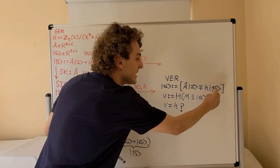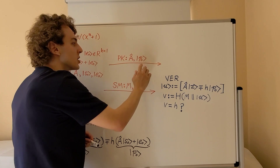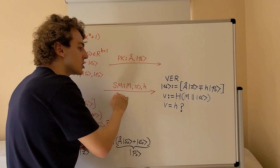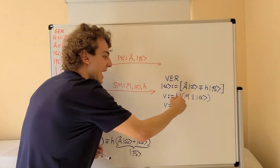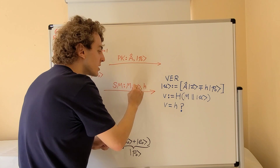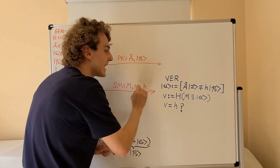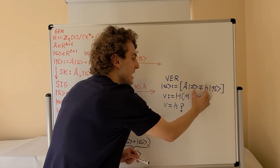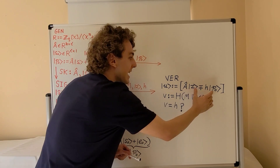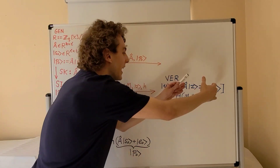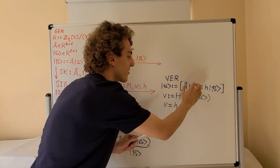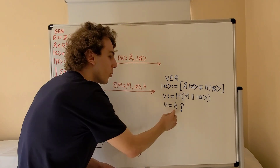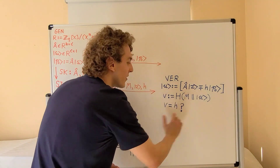So in the verification procedure, A and P0 came from the public key, and we use that information to define the value U. From the signed message, we got M, which is used to generate the hash V. We also got the signature, which includes Z and H — Z appears in the expression for U, and H also appears there. So Z and H come from the signature, A and P0 come from the public key, and we combine the public key with the signature to create this value.